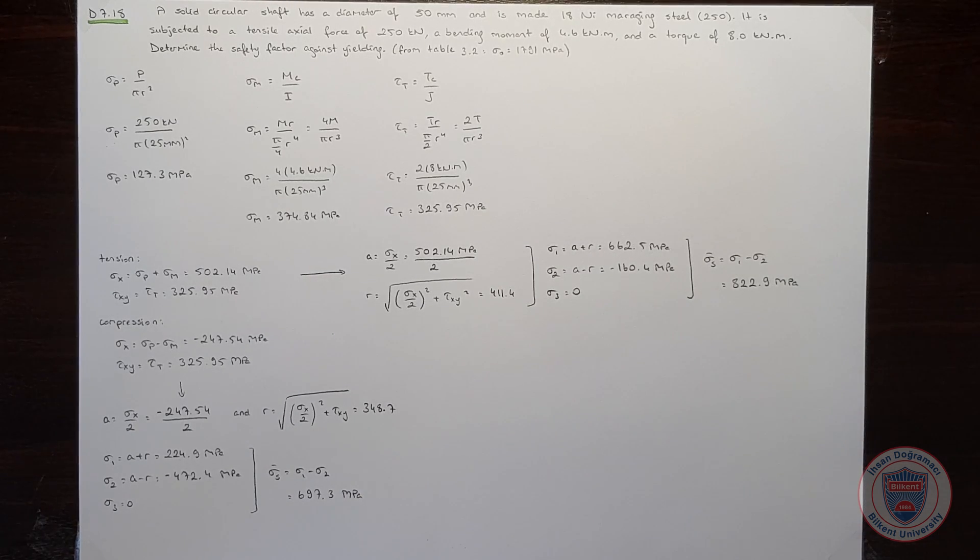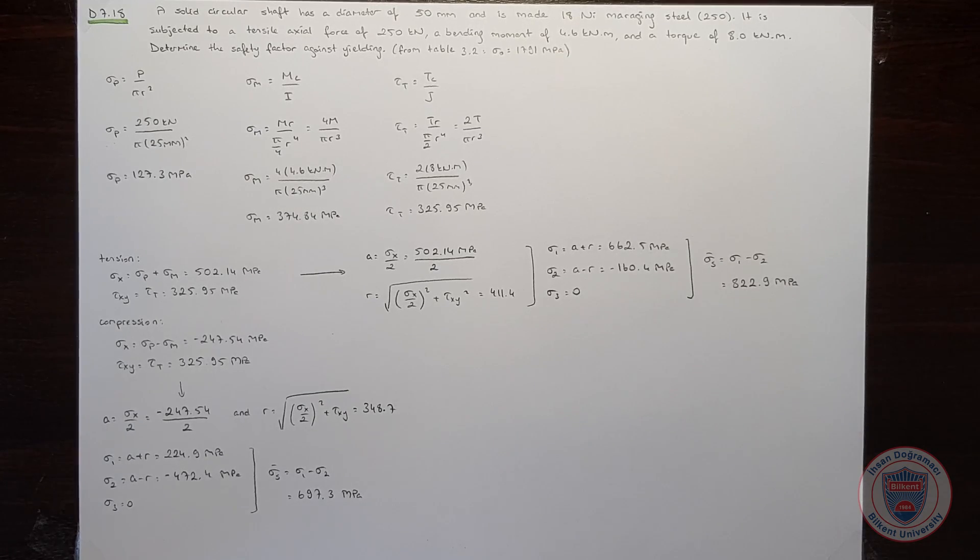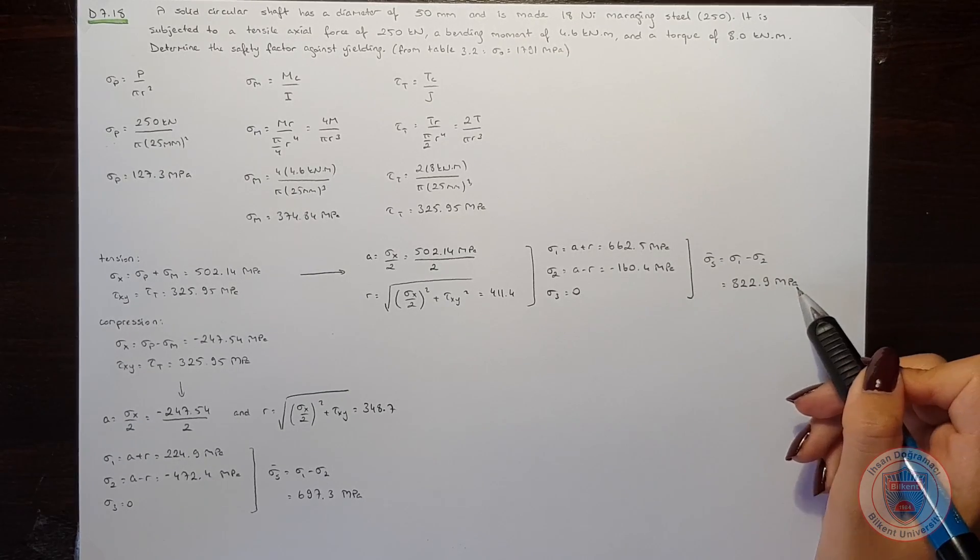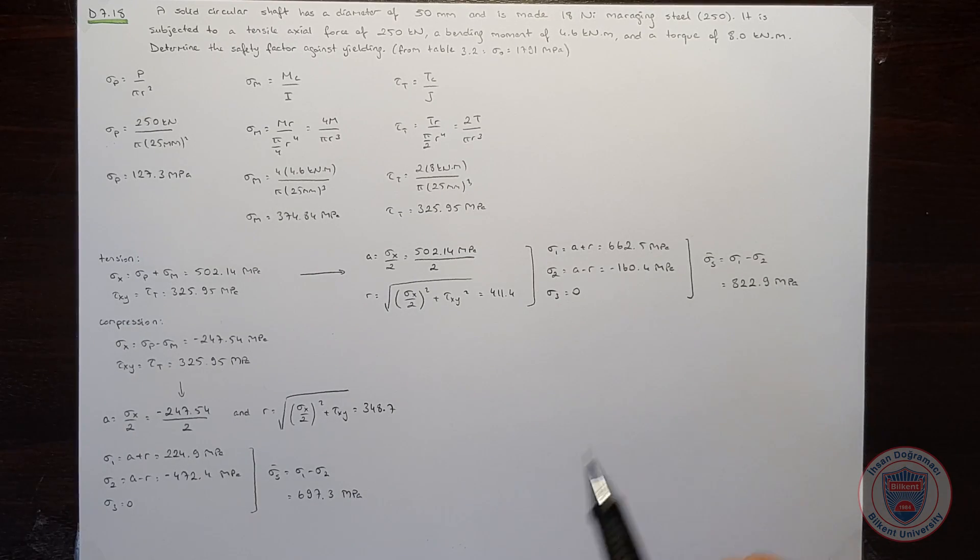When we compare these two cases, we see that the sigma s for tension is larger. So, we will consider this sigma s while calculating the safety factor against yielding.